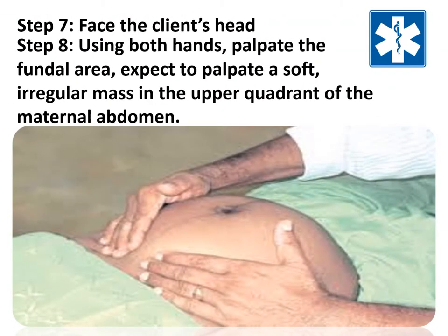Step nine: determine the size, consistency, shape, and mobility of the form. Always remember: the fetal head is hard, firm, round, and moves independently of the trunk, while the buttocks feel softer and are symmetric, and the shoulders and limbs have small bony processes.